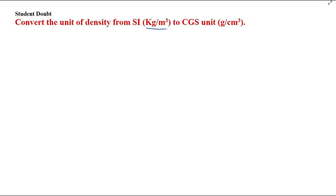The SI unit of density is kilogram per meter cube, and the CGS unit has gram per centimeter cube. You have to convert kg per meter cube to gram per centimeter cube.